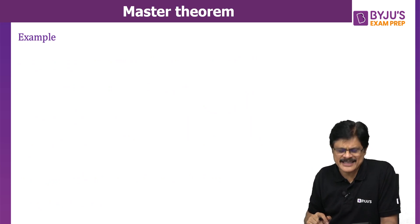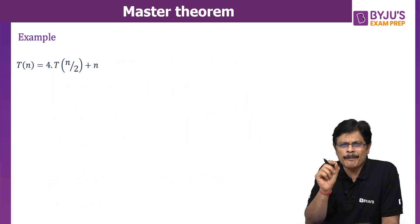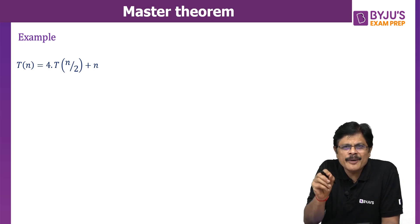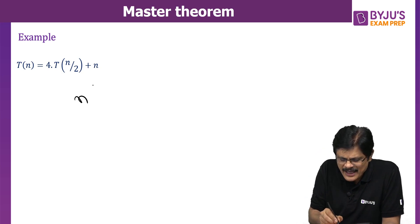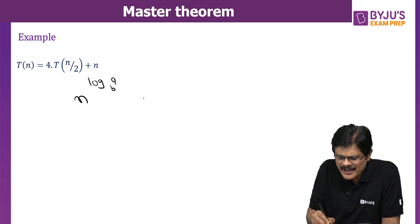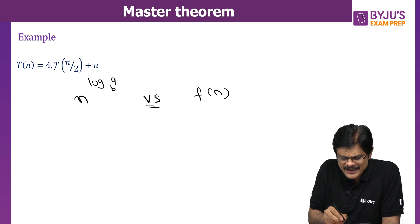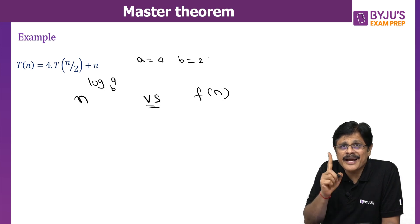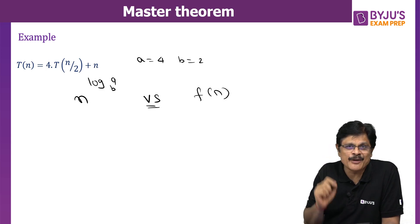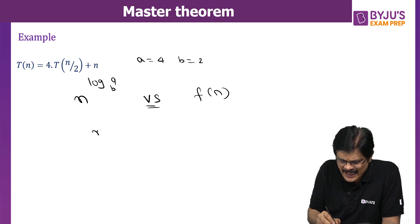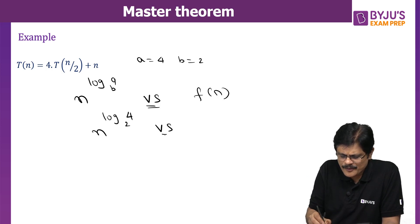Let us see Case 1 with a simple example. When you apply Master Theorem, it is essentially a match between two functions: n^(log_B A) versus F(n). In this example, you can easily see A = 4 and B = 2. Remember, A should be greater than or equal to 1, B should be greater than 1, and F(n) should be a positive function. Now substituting, we compare n^(log_2 4) versus F(n).